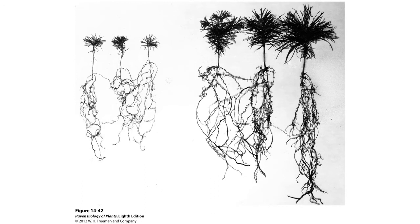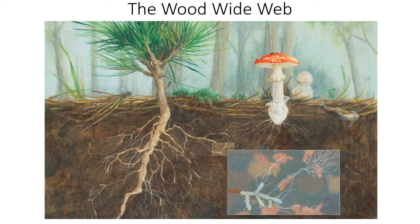Here we see two groups of seedlings: the three on the left had no mycorrhizal treatment, and those on the right did. At the same age, the mycorrhizal seedlings developed a much more robust root system and more leaves, meaning more tissues overall for photosynthesis and accessing water and nutrients in the soil.